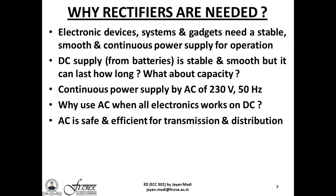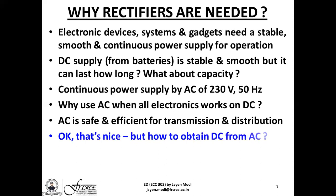It is very easy to step up or step down AC using transformers, but it is very difficult to do the same for DC. When AC is transmitted, transmission efficiency is high and losses are very low. So it is always easier to transmit AC compared to DC. But then, how do we obtain DC from AC at our homes?